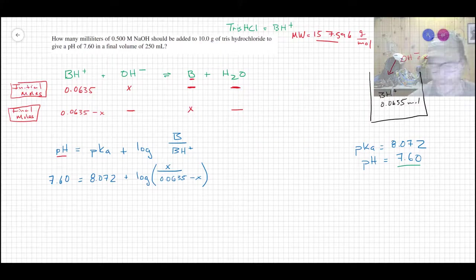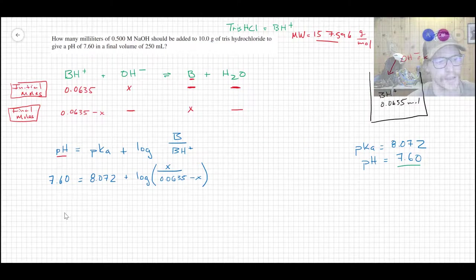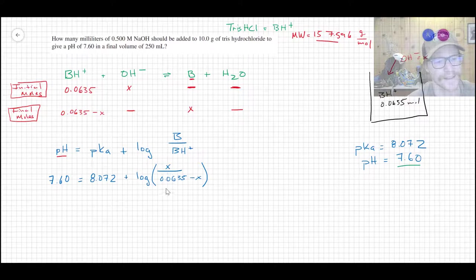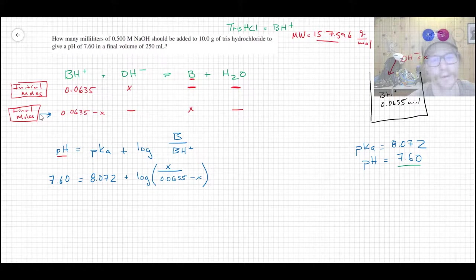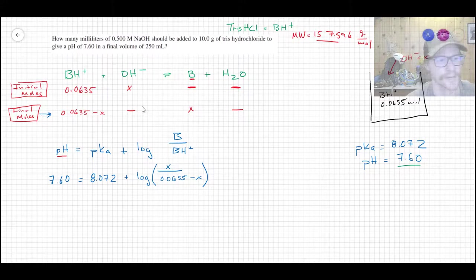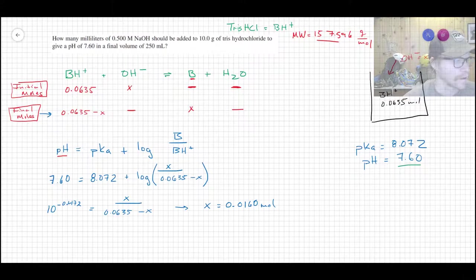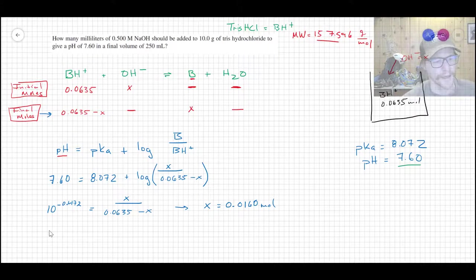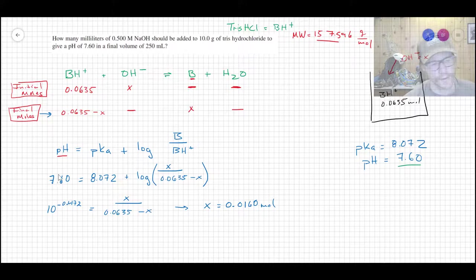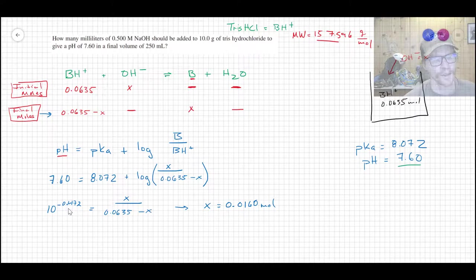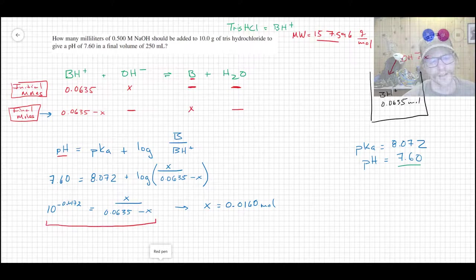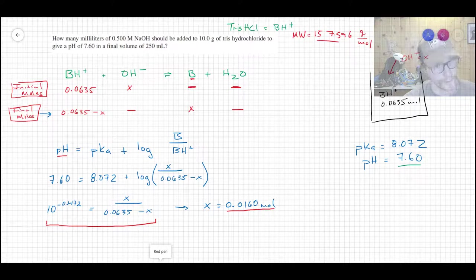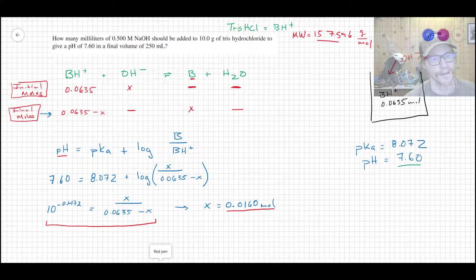So that's sort of an important aside. So let's solve this now. That gives us an expression that looks like this. So I just popped in the pH and the pKa and then I put X in for B and 0.0635-X for BH+ because those were our final condition, assuming they're not re-equilibrating, which is probably a fine assumption, but it's not going to be an exact assumption.